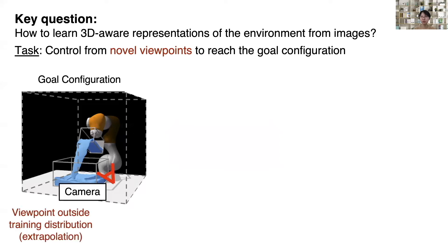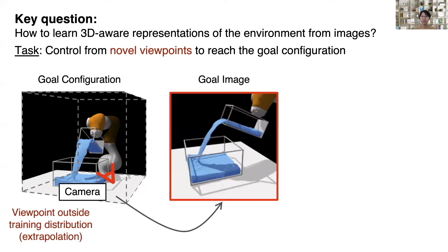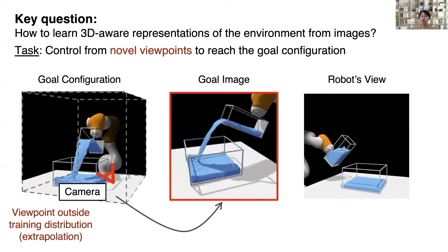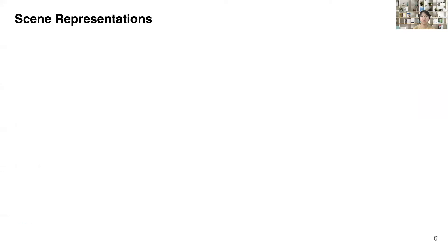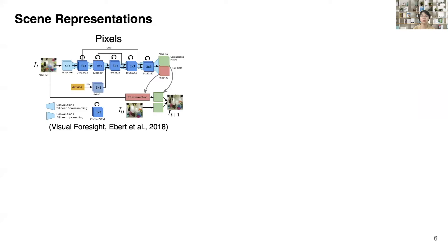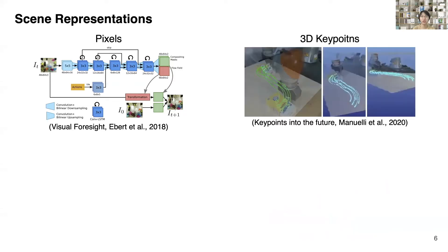In addition, we want the learned representation to generalize even if the goal viewpoint is outside the training distribution, and study how well the robot can still accomplish the control task. There are many works investigating different forms of representations with different characteristics. One line of prior work learns the dynamics model directly in the image pixel space. However, modeling dynamics in such a high-dimensional space is challenging, and these methods typically generate blurry images when performing long-horizon future predictions. Another line of work focuses on keypoints.